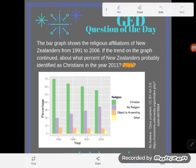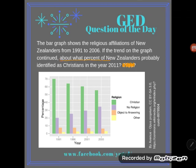So here we see this question and then the bar graph. It's a bar graph, so there are some super important things to make sure we do. First, let's make sure we understand what the question is asking us to find — about what percent of New Zealanders probably identified as Christians in the year 2011.